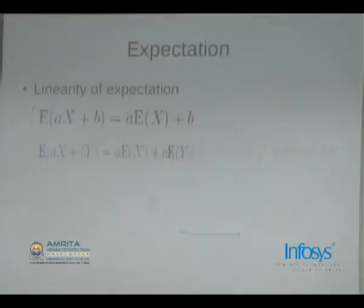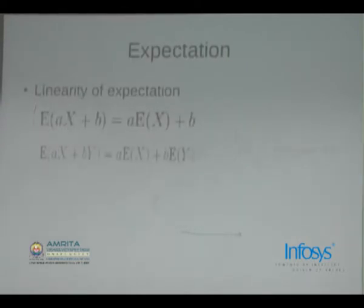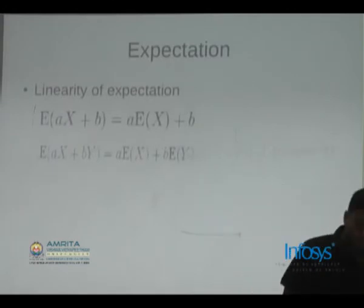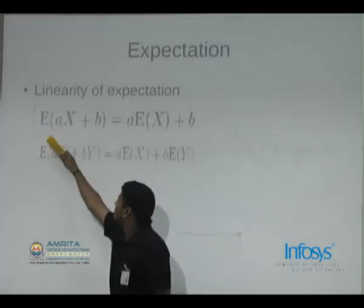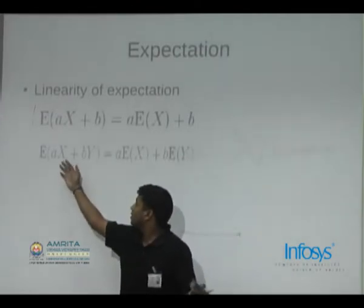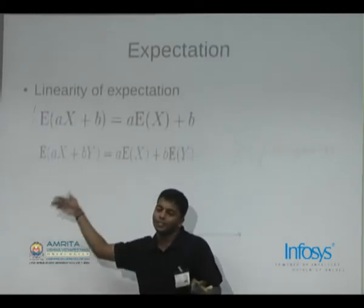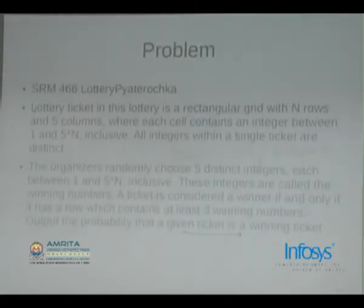The important concept about expectation is linearity of expectation. If I want to find the expected value of three times the sum of two dice, intuitively and provably, E[3X] = 3·E[X]. When you add a constant, it carries through. Similarly, for two random variables X and Y, E[aX + bY] = a·E[X] + b·E[Y]. This linearity property holds even when X and Y are not independent, as long as it is a sum. This essentially covers the theory of probability.